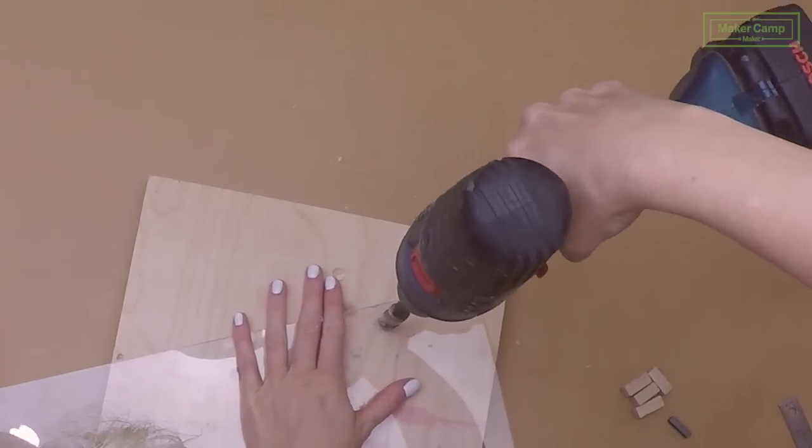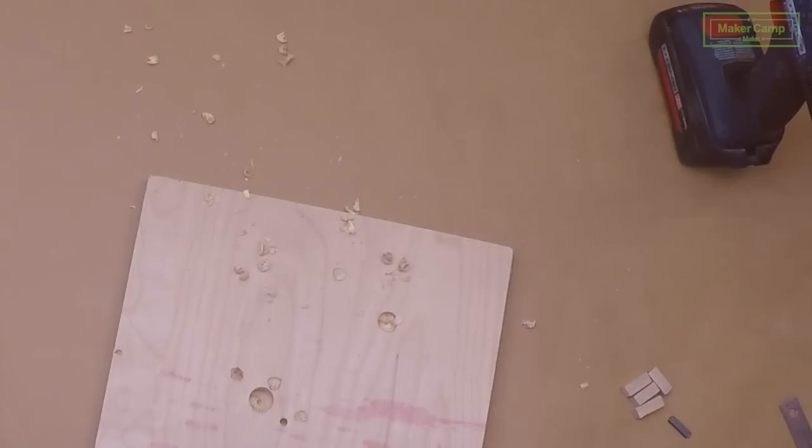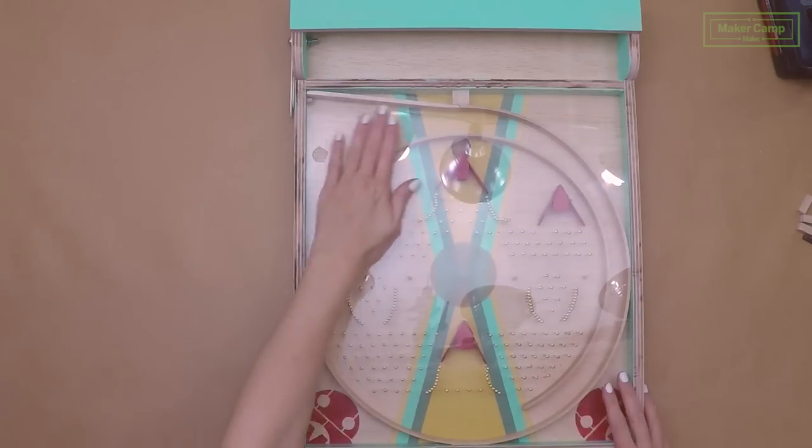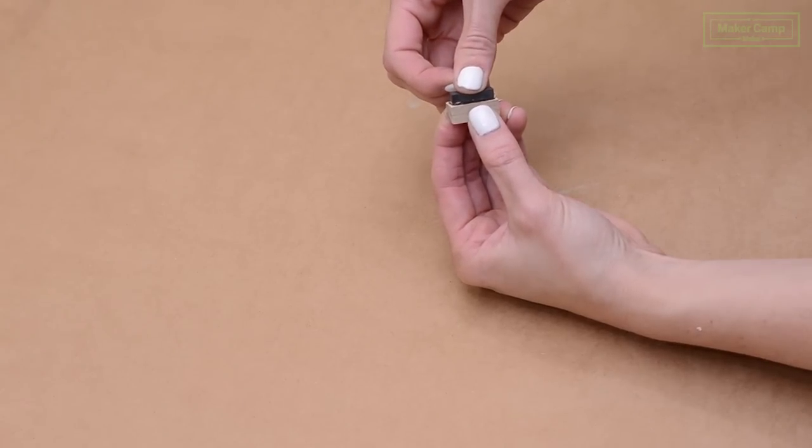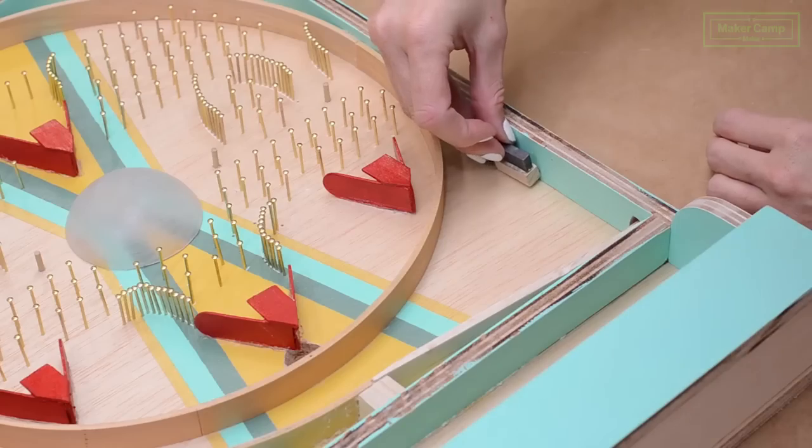You'll notice that we drilled a hole in the plexiglass. But make sure your magnet doesn't get in the way of your hole. Glue your magnet to the top of your wood scrap. Make three more. And then glue your wood and magnet pieces to the side of your pachinko board.